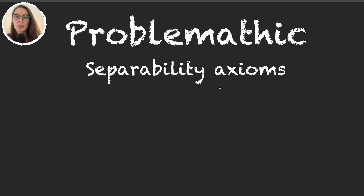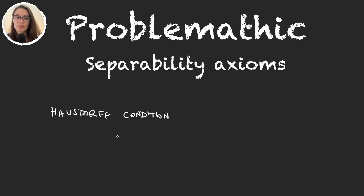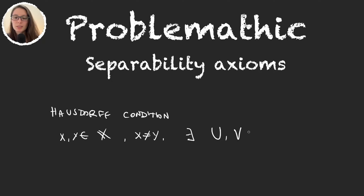In this video we are going to talk about the separability axioms. We already know one of these axioms, and we called it the Hausdorff condition. We said that a space X was Hausdorff if, given two elements X and Y that are different, there exist two open sets U and V.